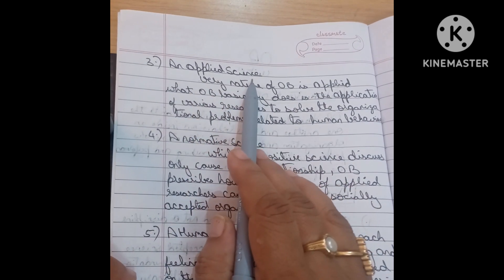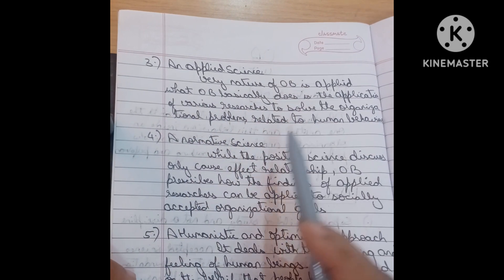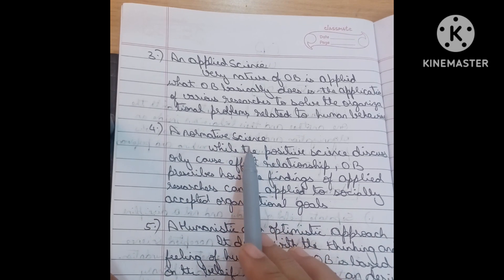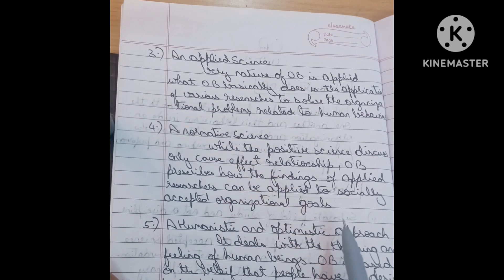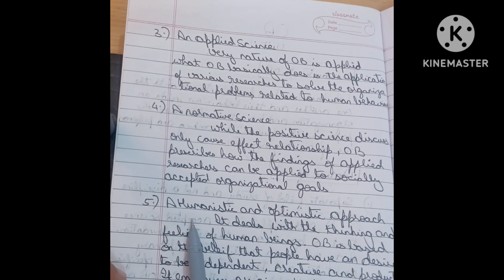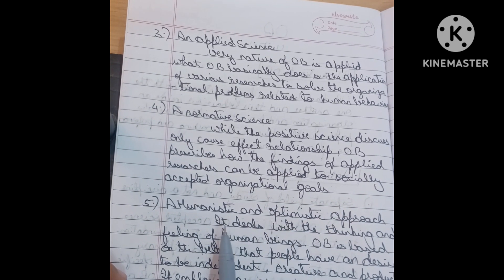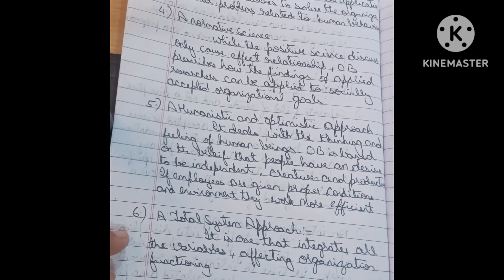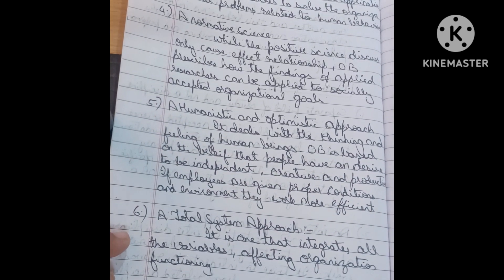Next one is it is an applied science. OB is an applied science. Next it is a normative science. These are the side headings. Remember the side headings and then write the notes for this. Next it is an optimistic approach. Next one is it is a total system approach. These are the side headings we have to write for nature of OB.